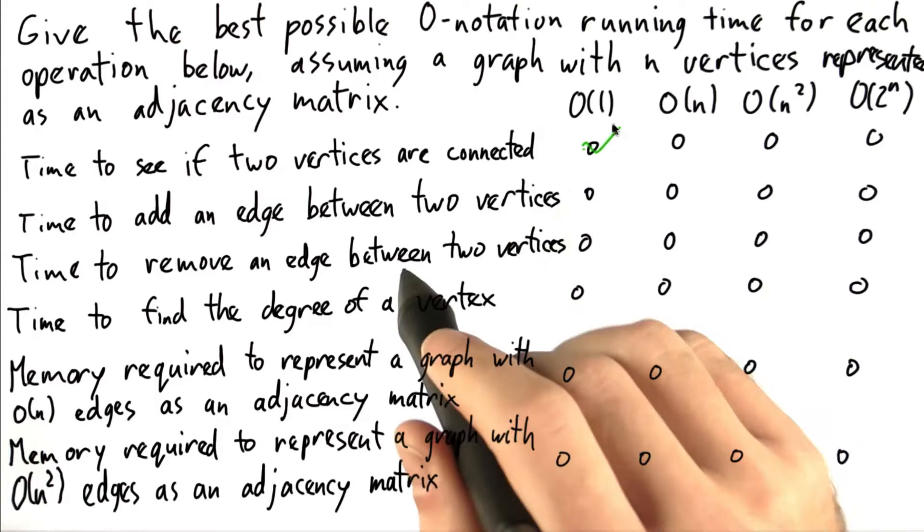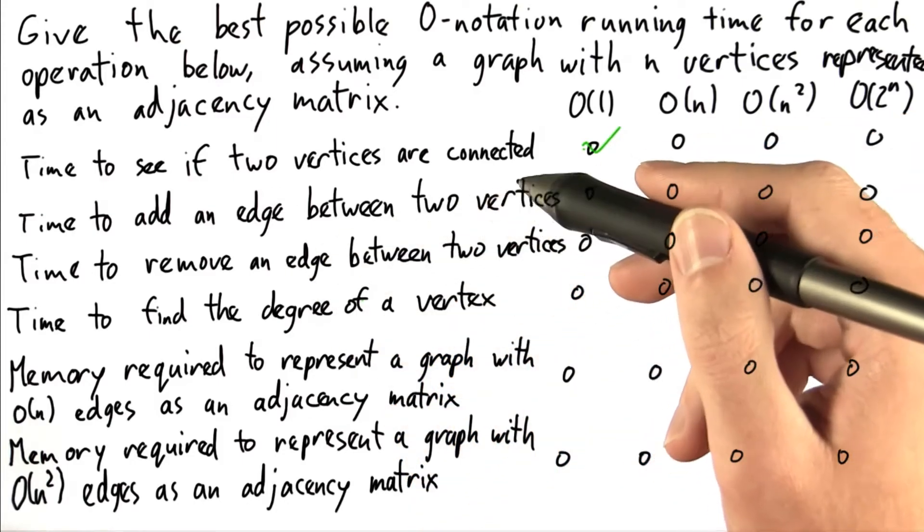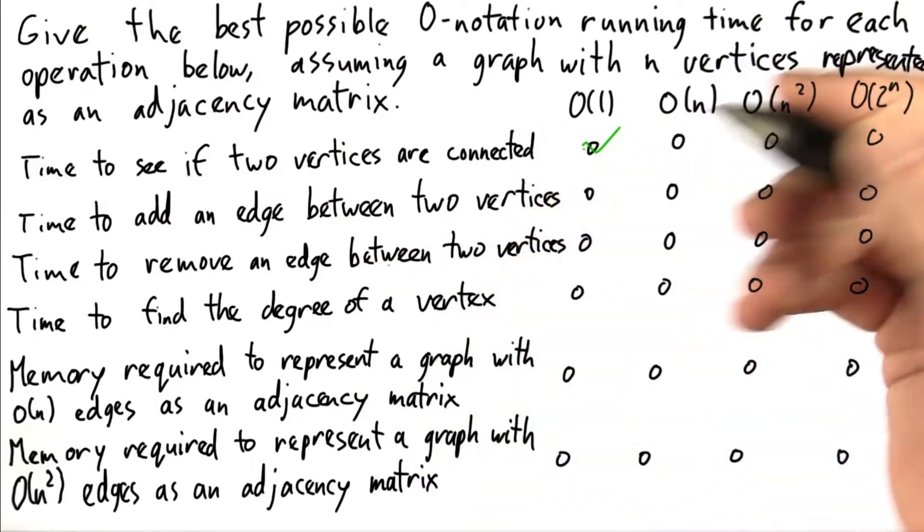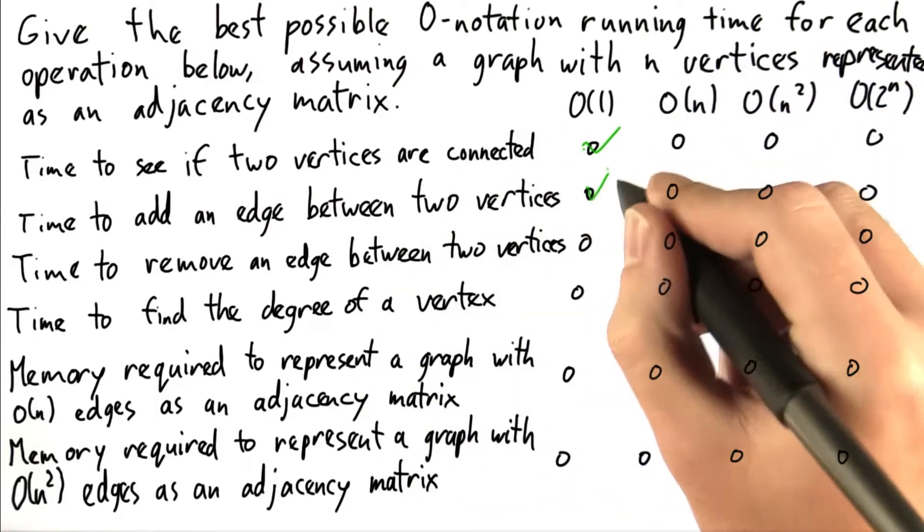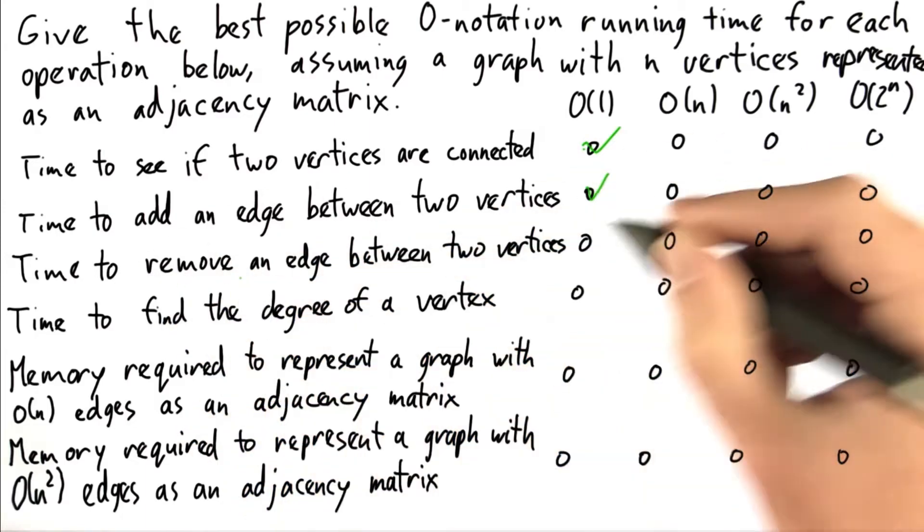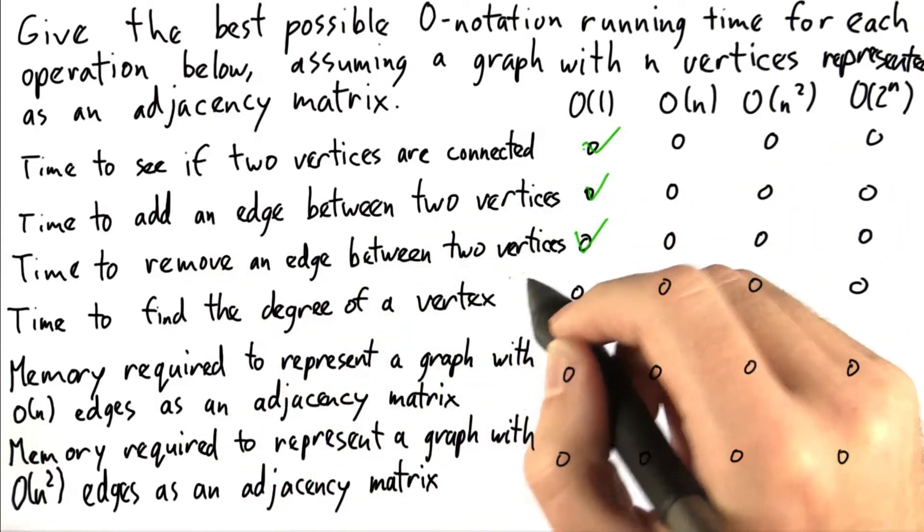Similarly, the time required to add an edge between two vertices—we can access that element in constant time and then just change it from 0 to 1. That's constant time. And similarly, we can change from 1 to 0 to remove an edge between two vertices.